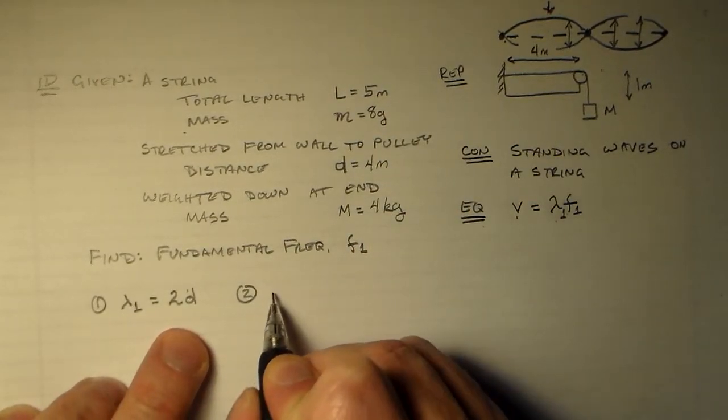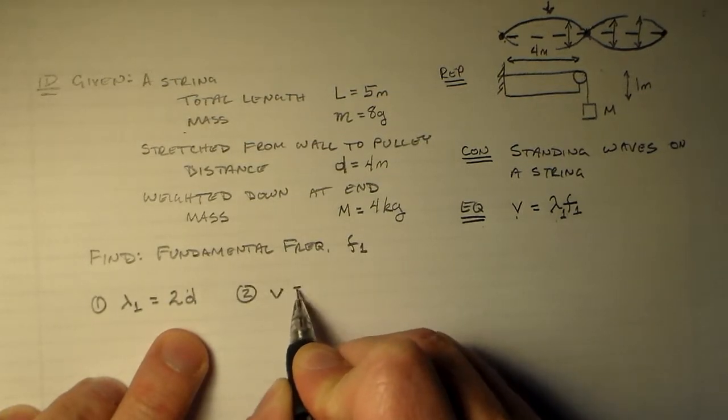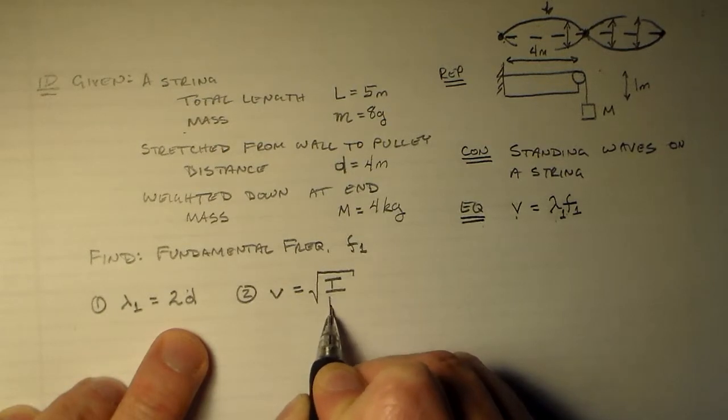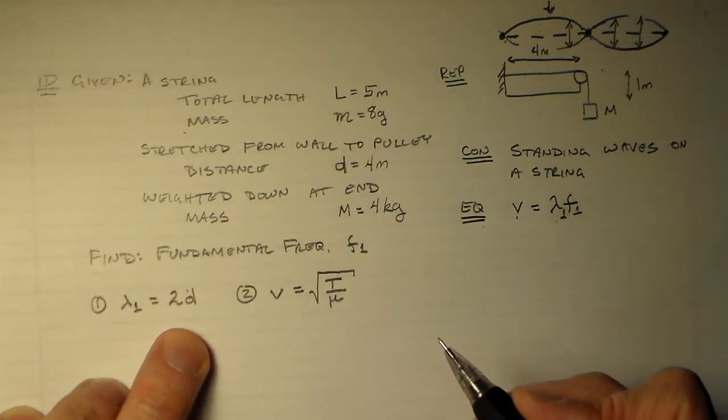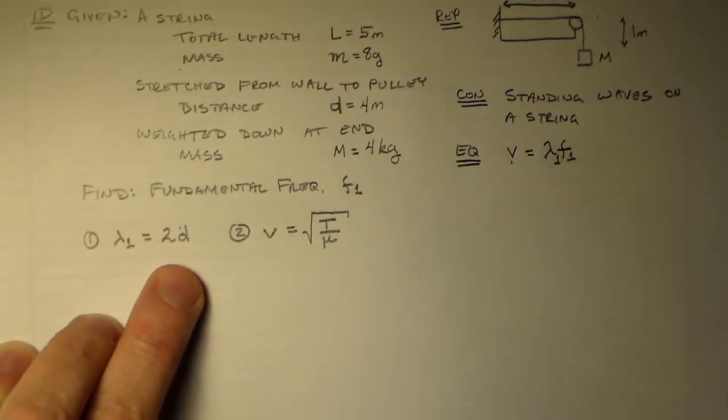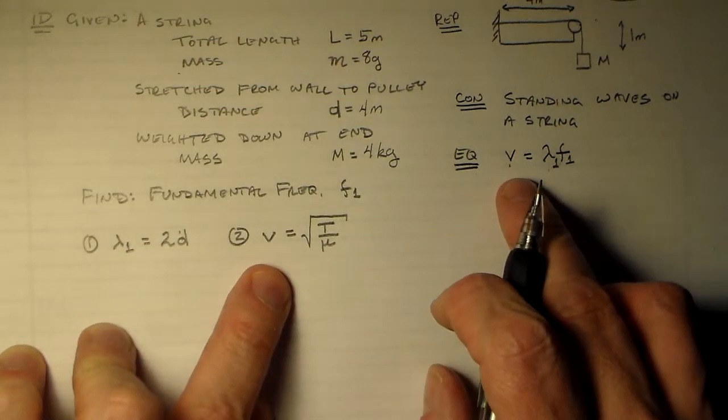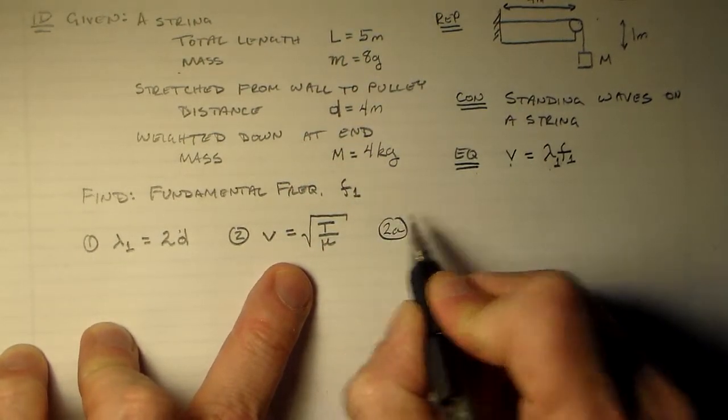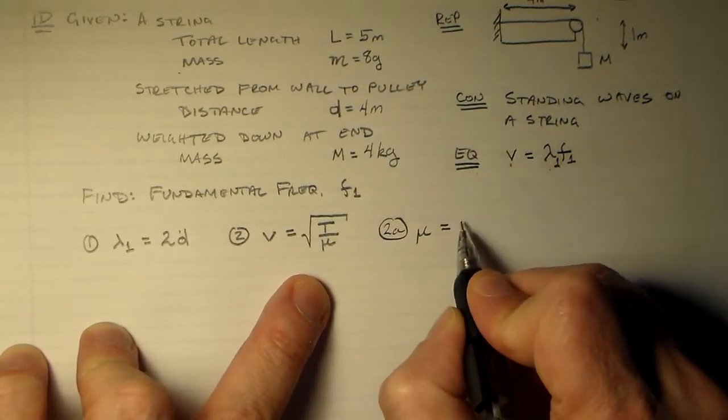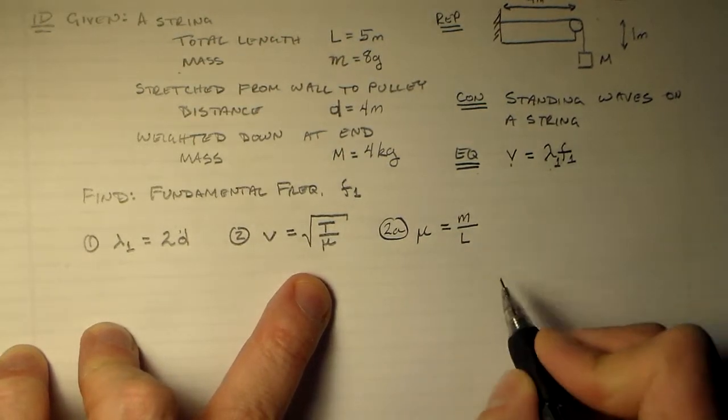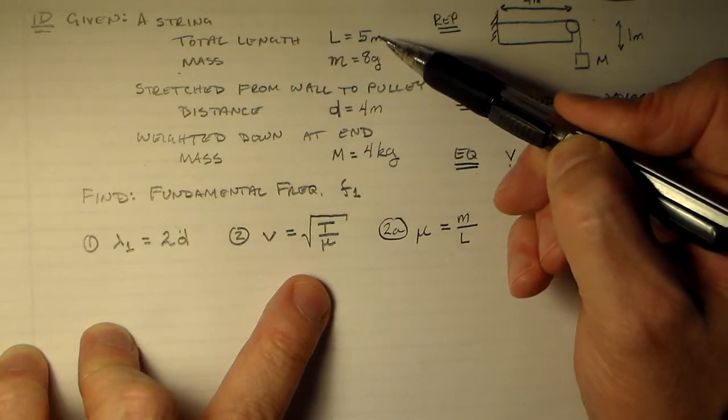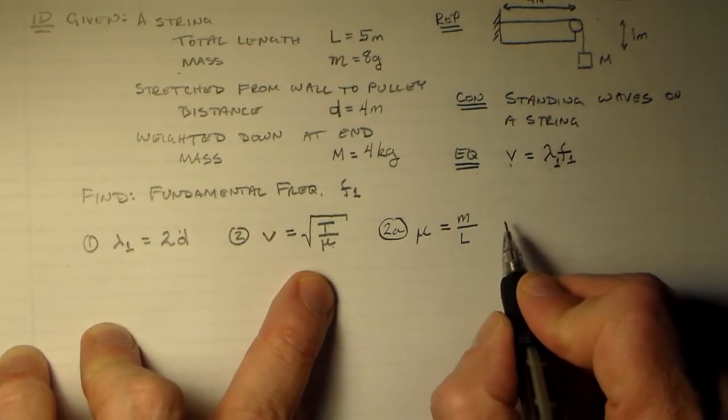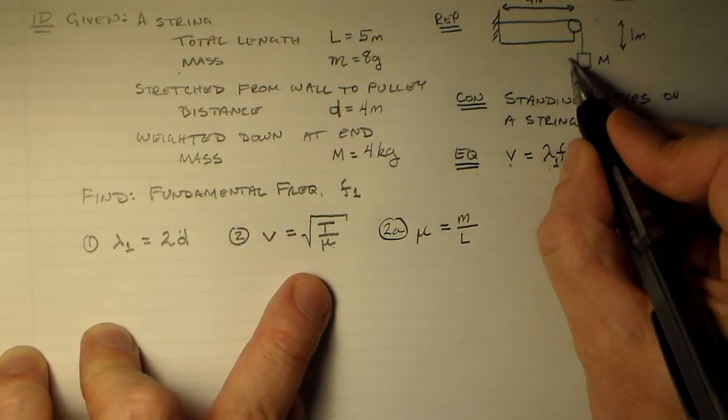But how about this guy? How do we relate this to these quantities? Well, remember from chapter 16, the velocity is the ratio of some sort of force divided by some sort of inertial property. In this case, the linear mass density of the string. So, now we can use this as well to relate the V to these things. And that's because the linear mass density is equal to the total mass divided by the total length of the string, just like you did in lab. And so, that gets rid of this guy. This guy, we still need the tension.